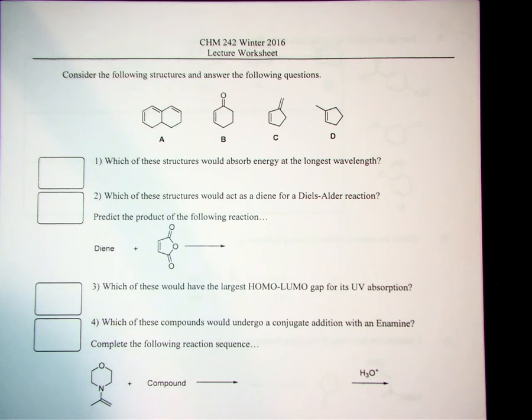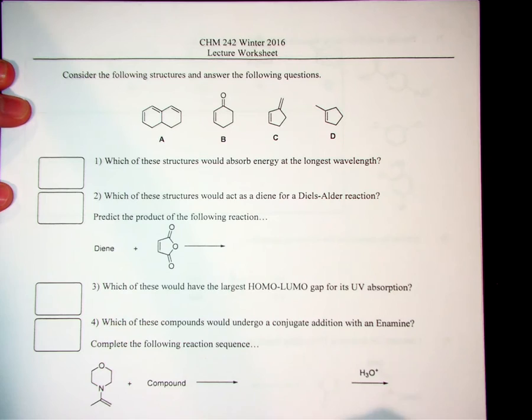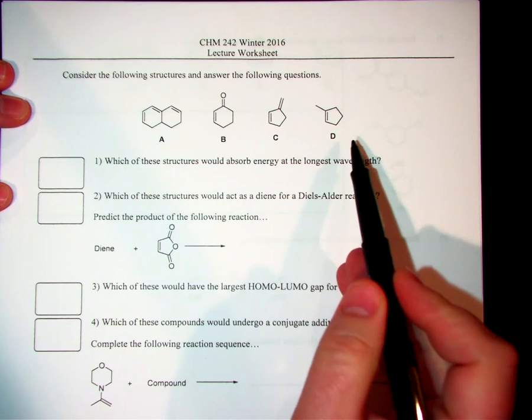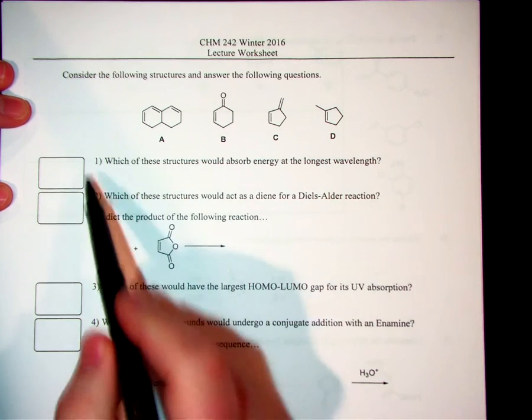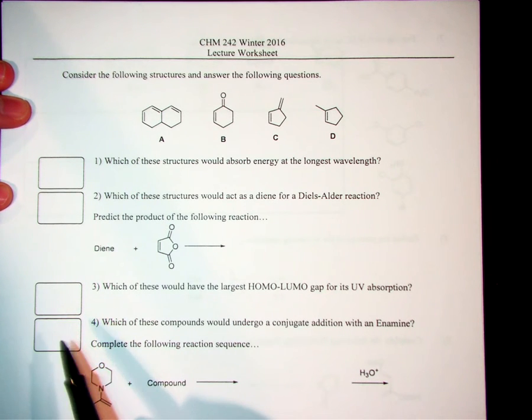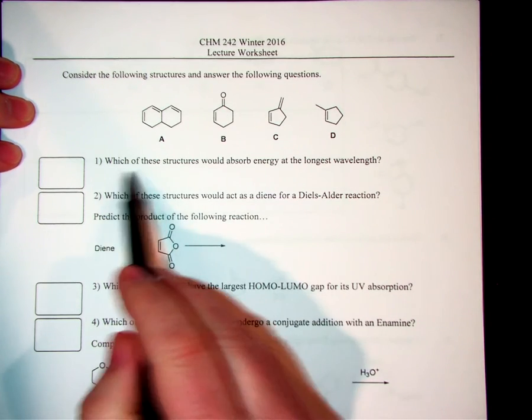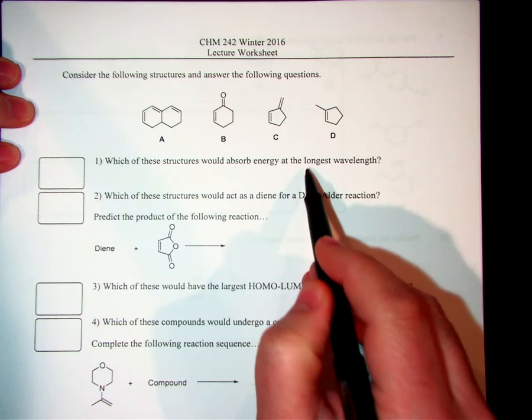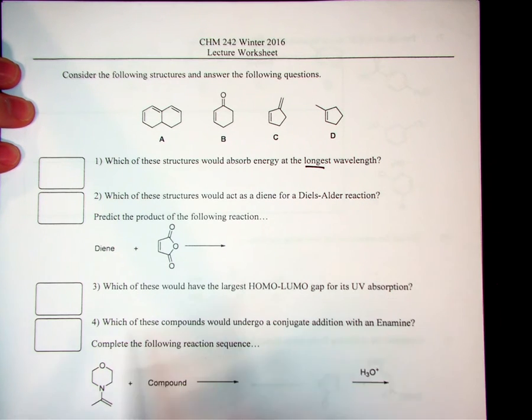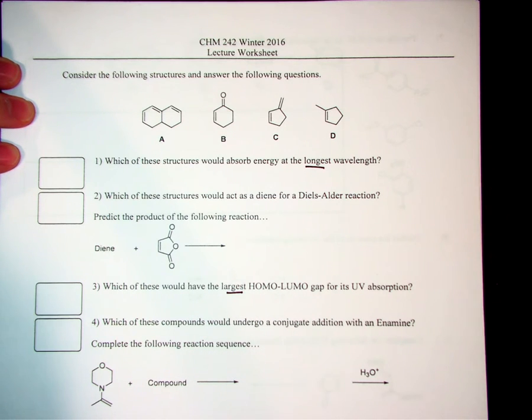I wanted to go over some of the problems from the worksheet that I gave you guys today in class. Most of the questions on the first page were dealing with these four different compounds, and I want to focus on the two questions, question one and question three, that deal with UV spectroscopy. The first one asks which of these structures would absorb energy at the longest wavelength, and the second asks which of these would have the largest HOMO-LUMO gap for its UV absorption.